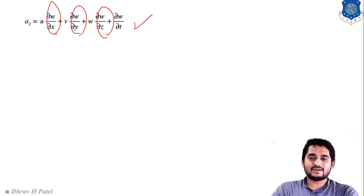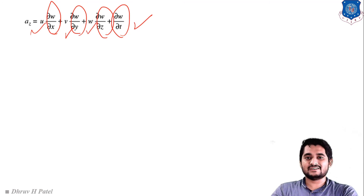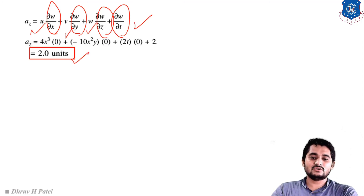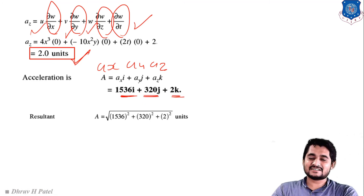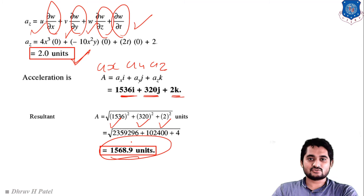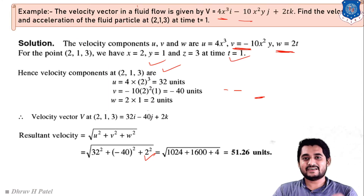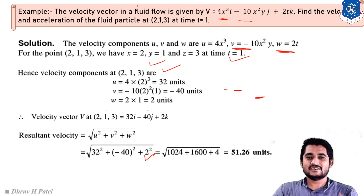Now we have ax = 1536, ay = 320, az = 2. The resultant acceleration vector is 1536·i + 320·j + 2·k, and the resultant acceleration magnitude is √(ax² + ay² + az²) = 1568.9 units. This is the example regarding velocity and acceleration of the fluid particle. In GATE or PSU examinations, this type of example will surely be asked.